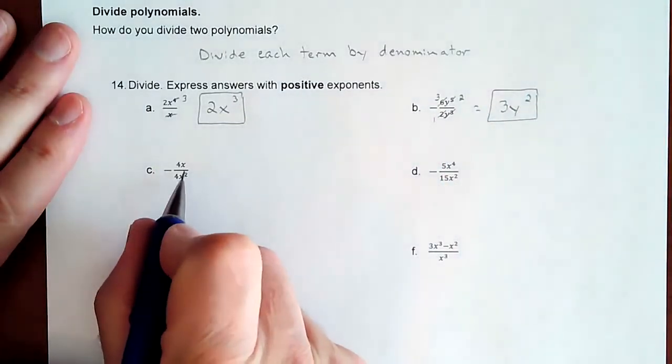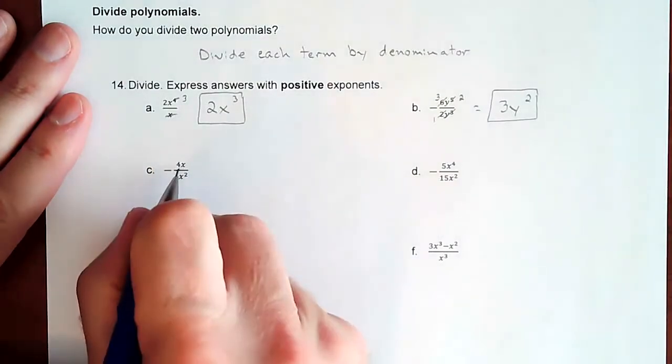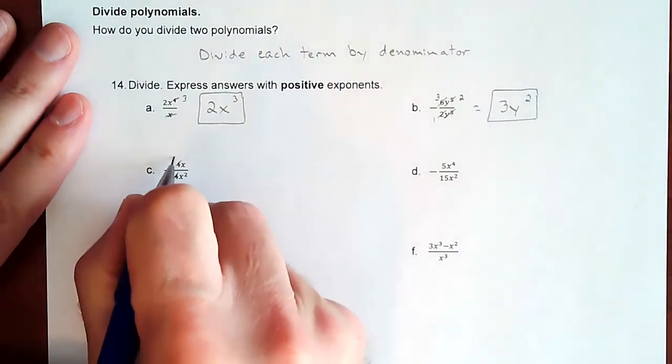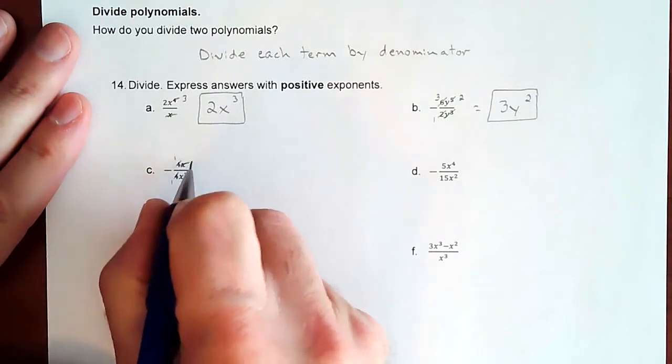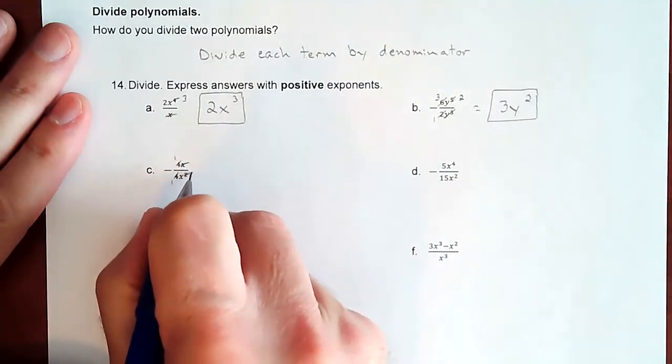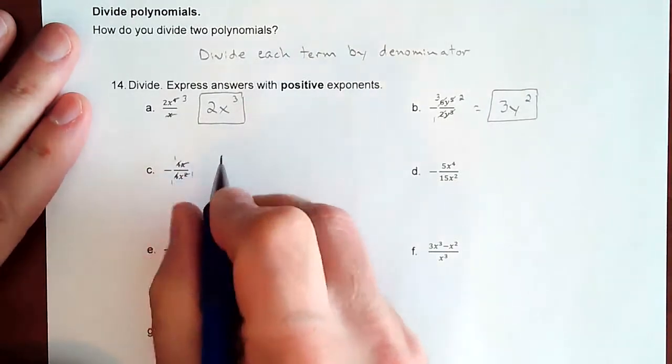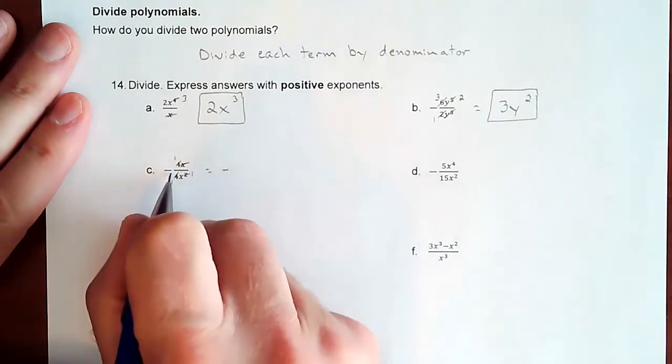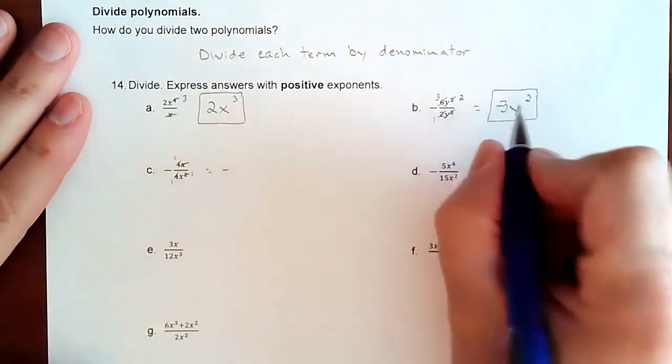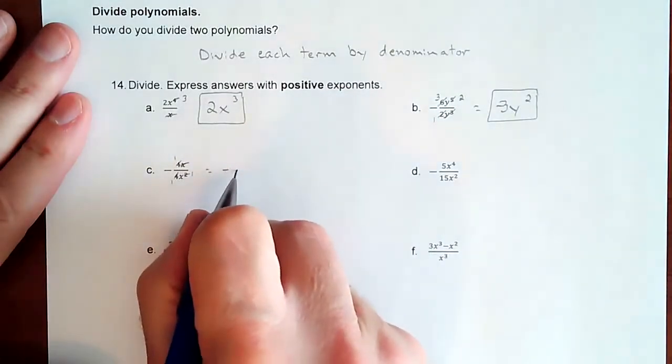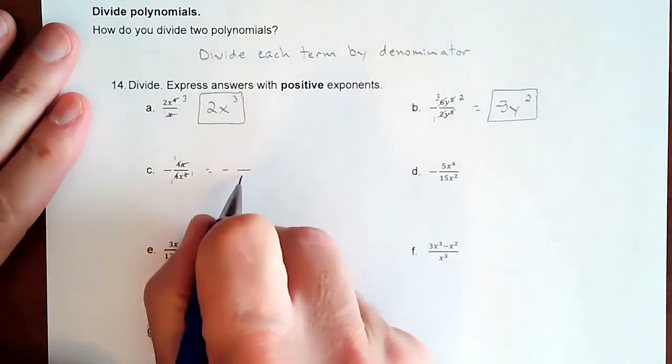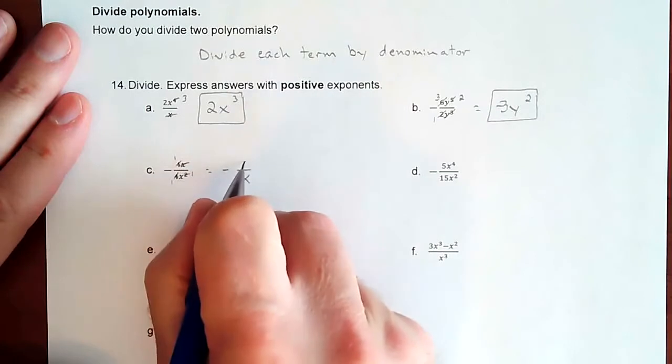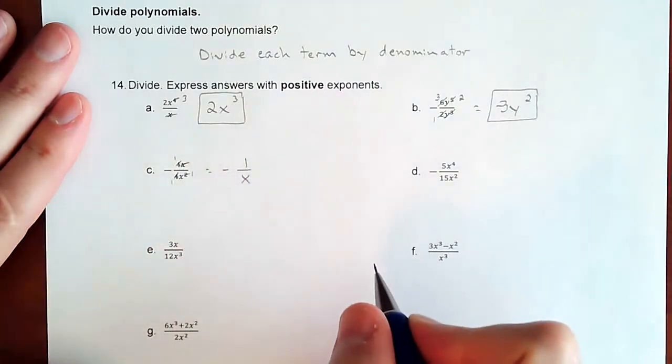But sometimes you have more X's on the bottom than on the top. And so the fours would cancel, giving you ones. The X on the top would cancel with one of the X's on the bottom. And you would just have a negative on that one as well. And you have an X left over on the bottom, nothing left over on the top. So you should have a one still.